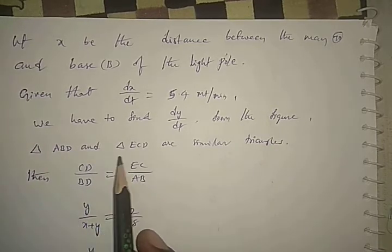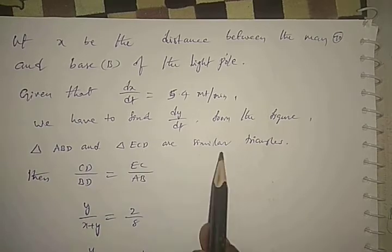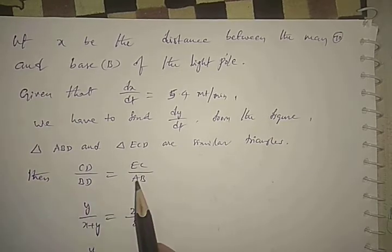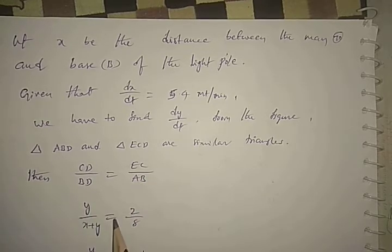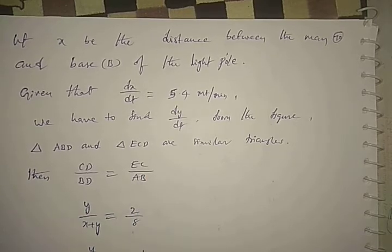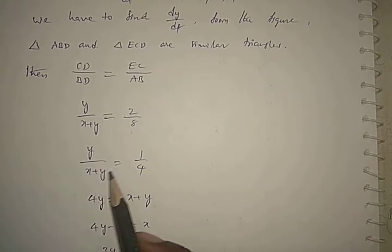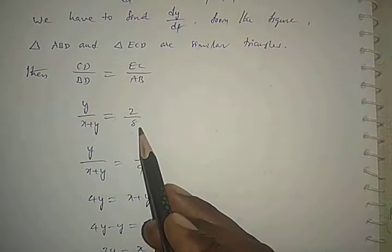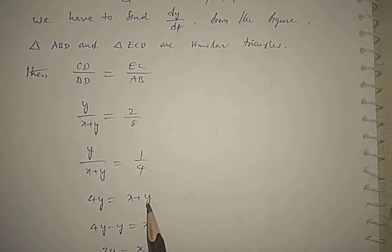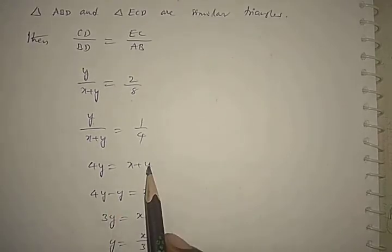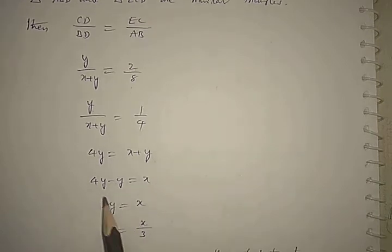From the figure, triangles ABD and ECD are similar triangles. Therefore CD/BD = EC/AB. CD is Y, BD is X plus Y, EC is 2, and AB is 8. So Y/(X+Y) = 2/8 = 1/4. Cross multiplying: 4Y = X + Y, so 4Y minus Y = X, giving us 3Y = X.